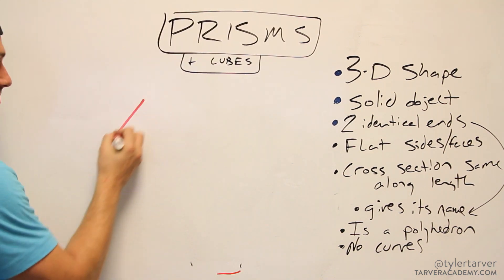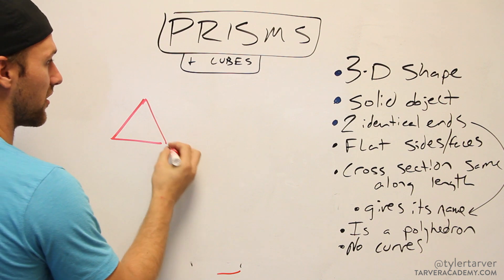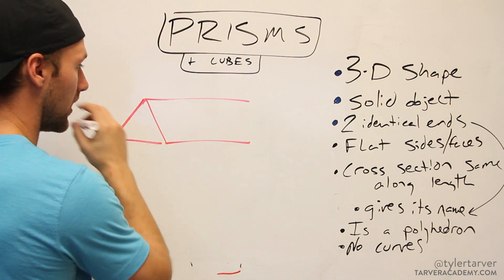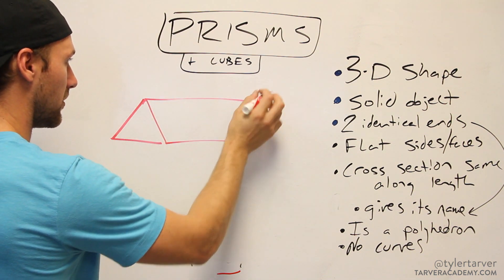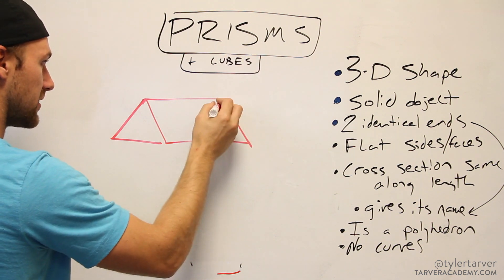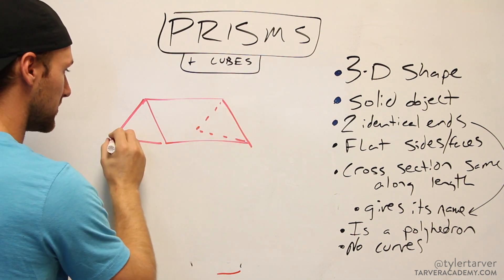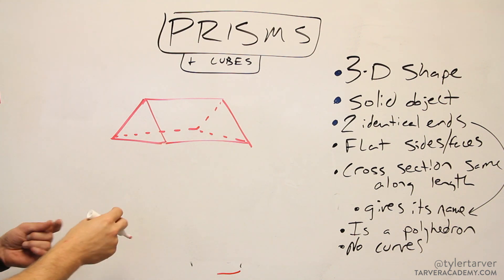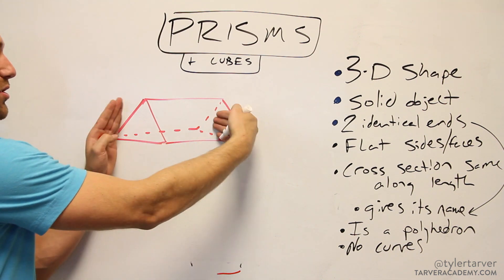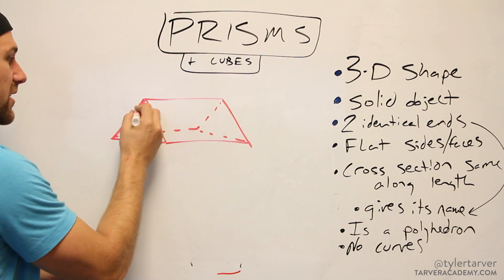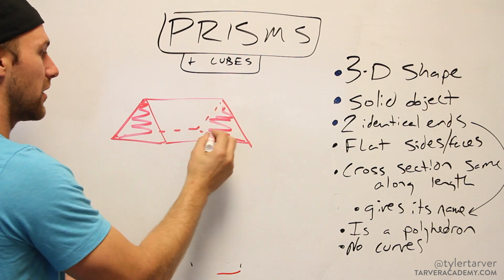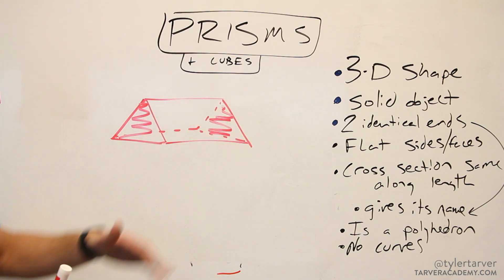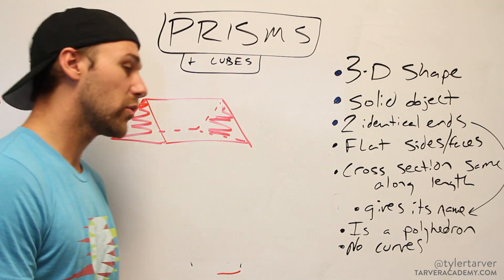Let me show you a drawing of a triangular prism. So we've got a triangle here — and then it goes like that. You've got triangles on this side, that one, and that one, and then it's connected by three rectangles. That's a triangular prism.